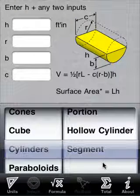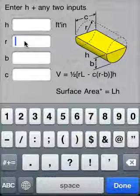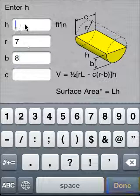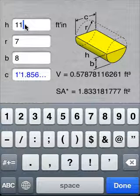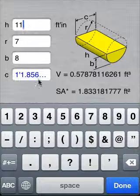This time we are instructed to enter H plus any two inputs. We will enter a radius of 7 first, then 8 for the fill height, and 11 for the cylinder height. Another feature seen here is the calculation of all the other parameters in addition to the volume and surface area.